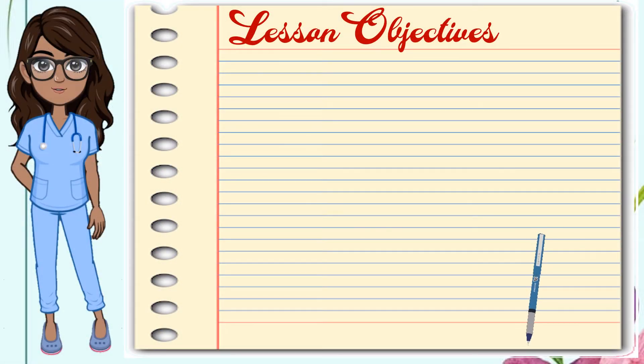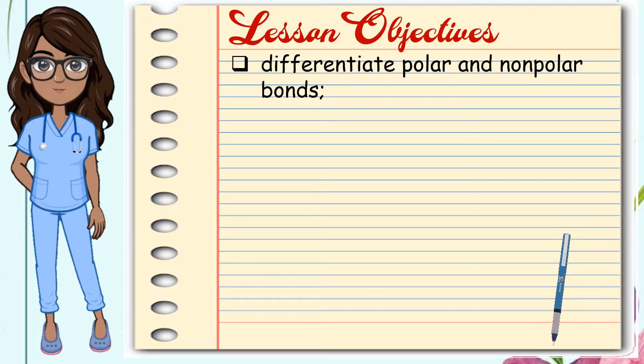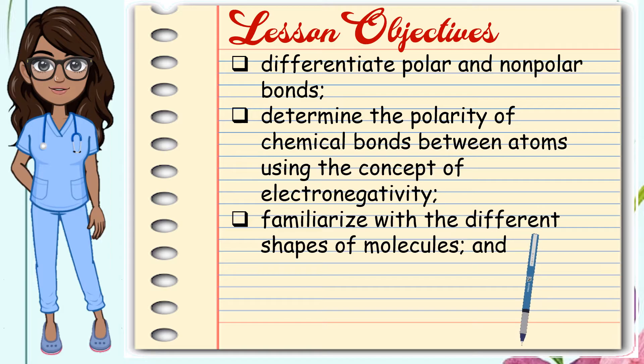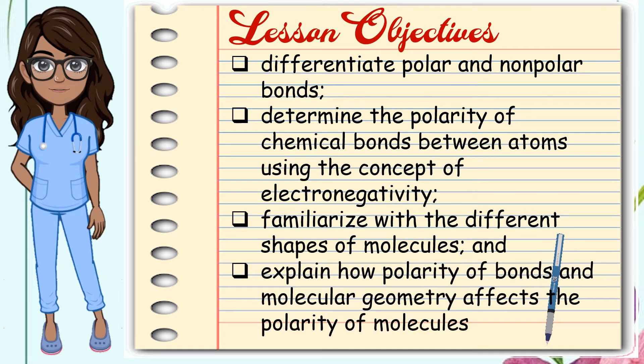At the end of this lesson, you should be able to differentiate polar and non-polar bonds, determine the polarity of chemical bonds between atoms using the concept of electronegativity, familiarize with the different shapes of molecules, and explain how polarity of bonds and molecular geometry affects the polarity of molecules.